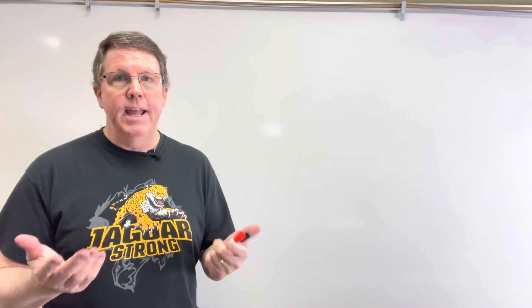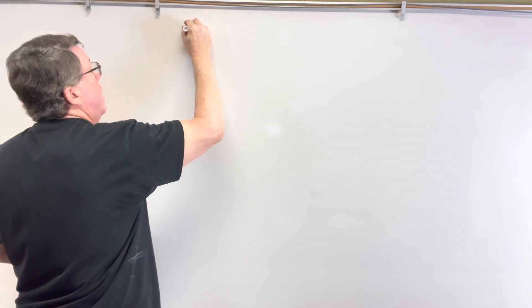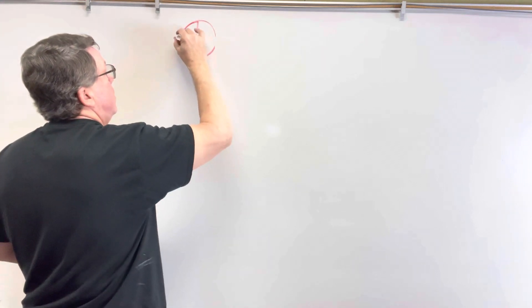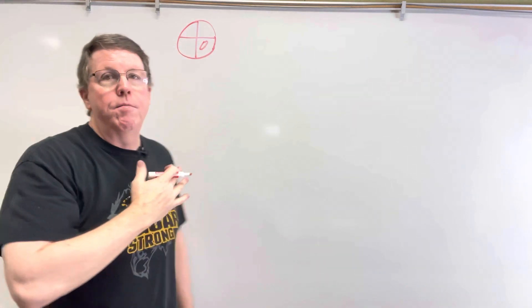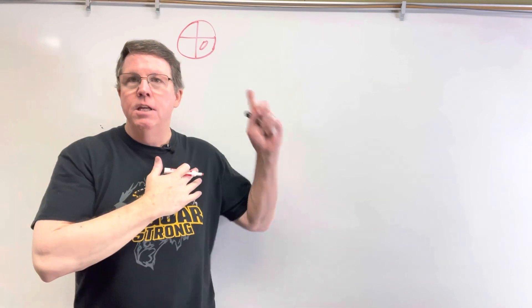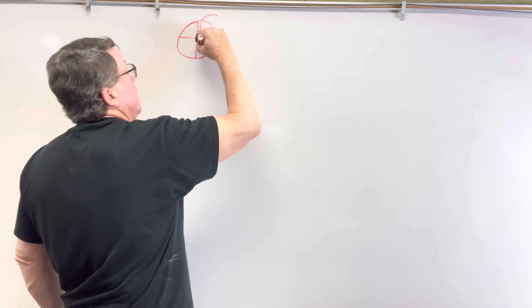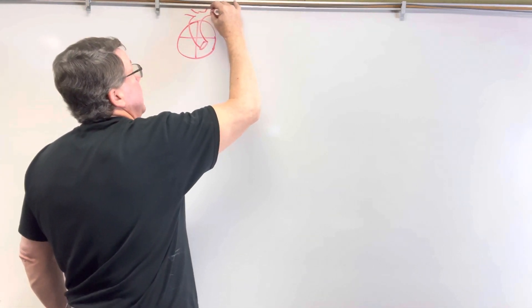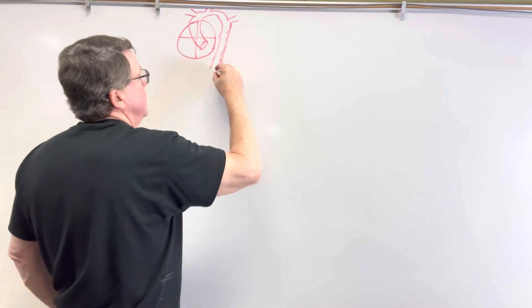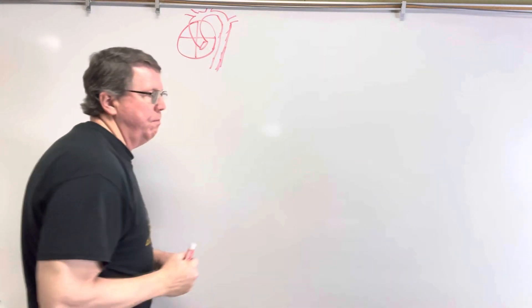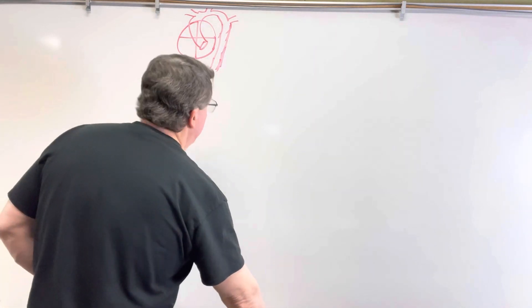If we look — I mentioned this in my abdominal aneurysm video — you have the heart. This is the right and this is the left side of the heart. An artery comes out from here and this is going to be called the aorta. The aorta comes down and you have what we call the descending aorta. The descending aorta has two parts: the thoracic aorta, which I'm not too interested in for this video, and the abdominal aorta.